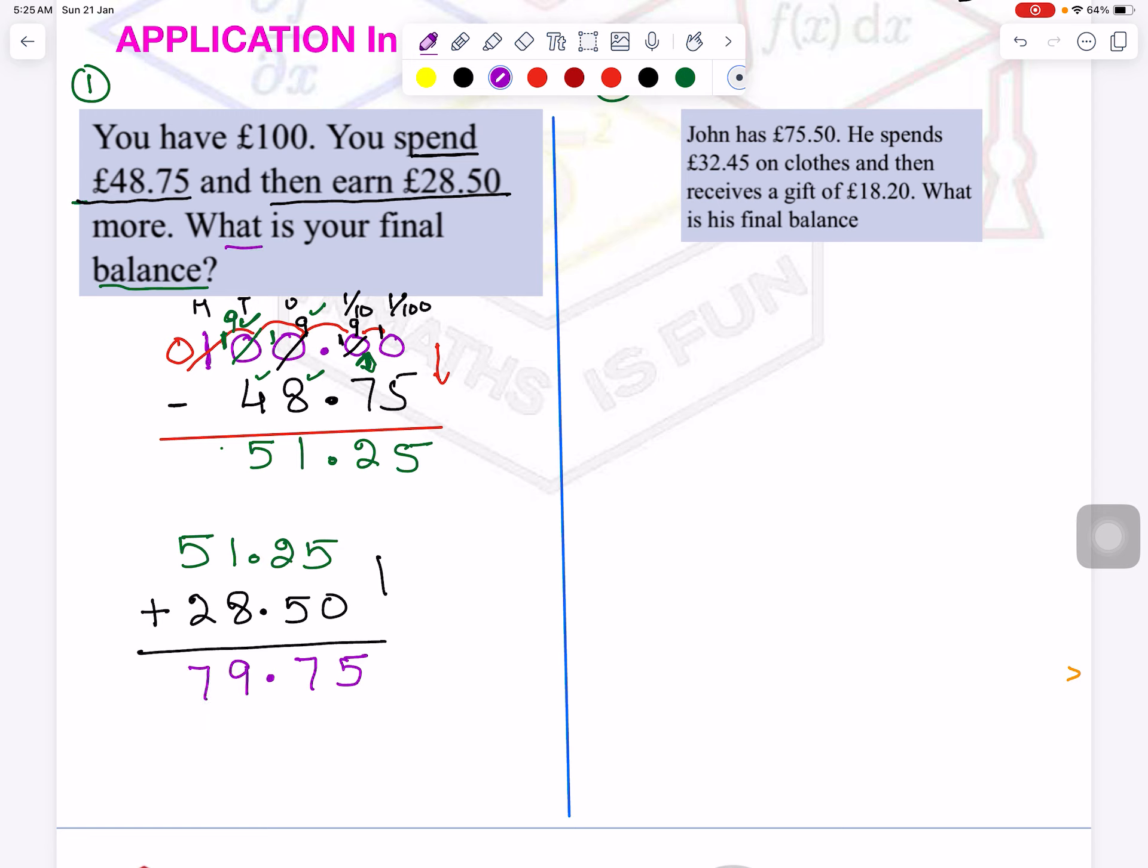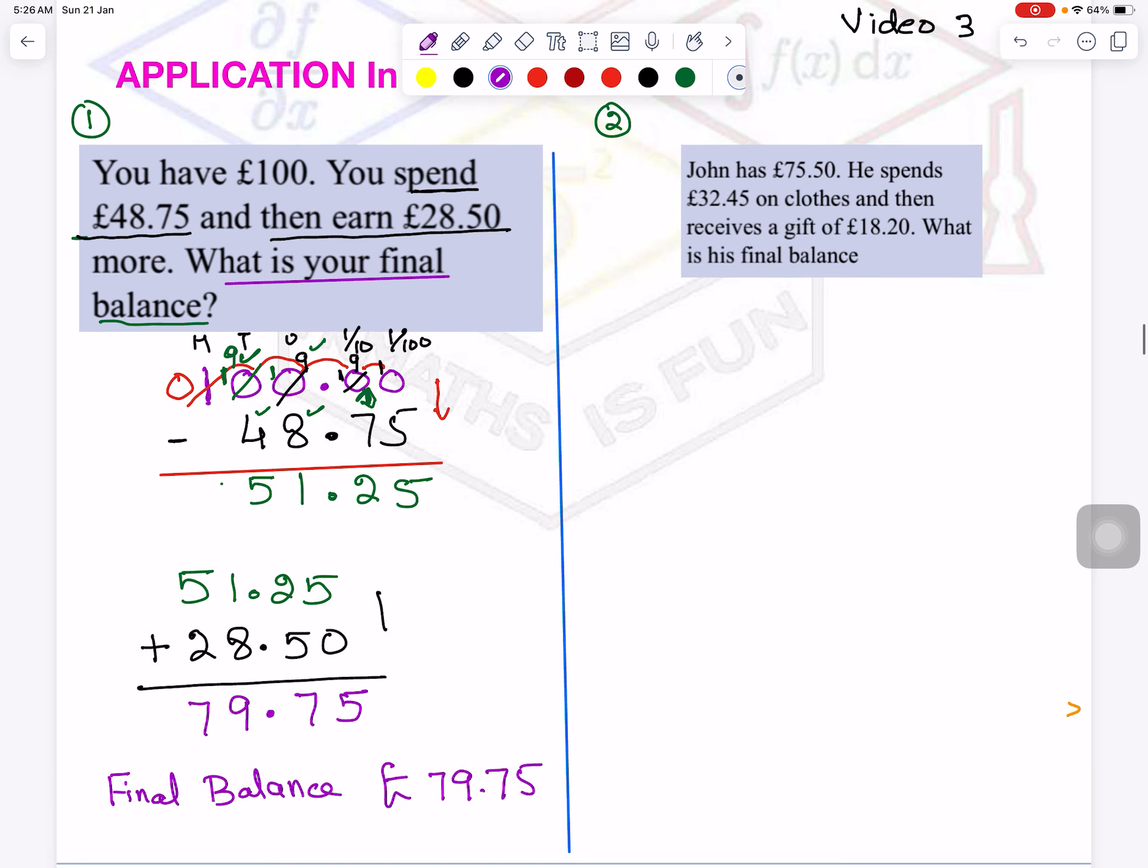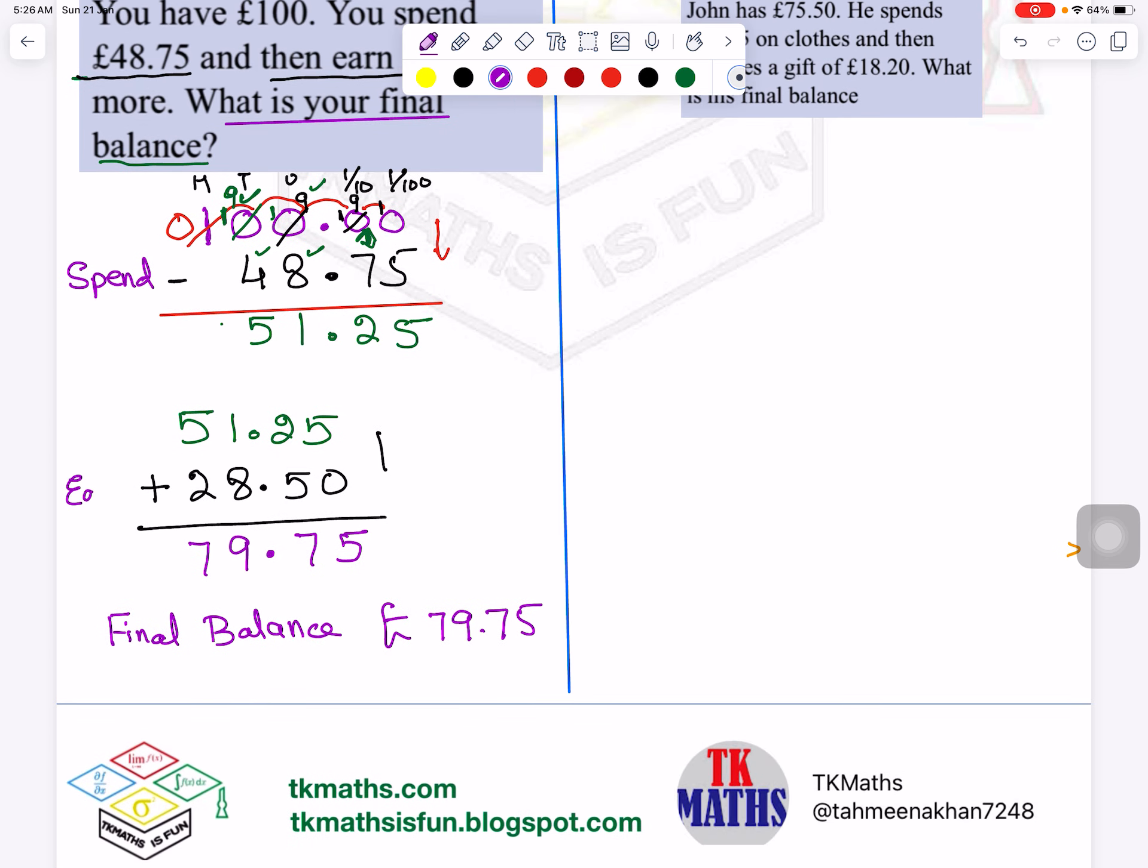So question is saying, what is your final balance? Mean what do you have now? So you can say, in the last final balance, always write a statement. In word problems, it is very important that you tell what is your answer representing. The final balance is £79.75. And here I should have mentioned spend, so one should know why I am subtracting. And here I should know what happened, what is this amount.